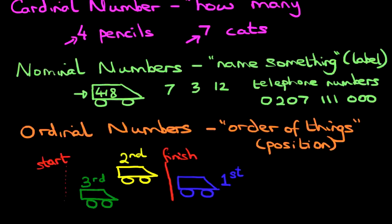So just to recap, these are the different types of numbers. You've got cardinal numbers, which means how many. Nominal numbers, which name or label something. And ordinal numbers, which tell you the order or position of things.